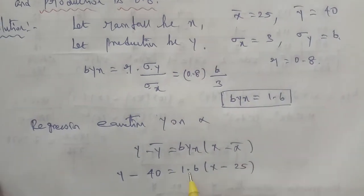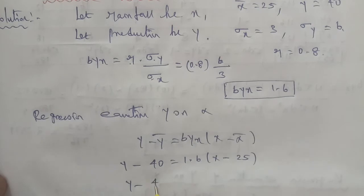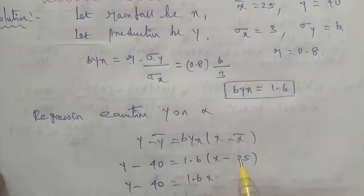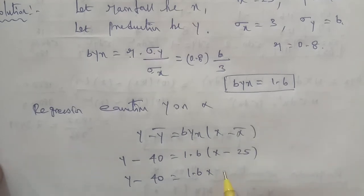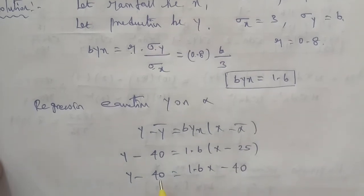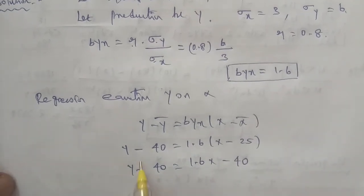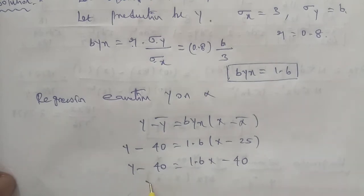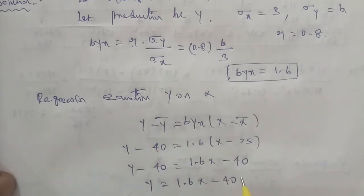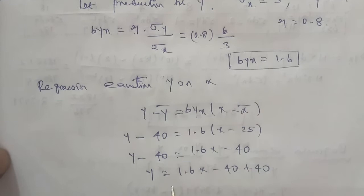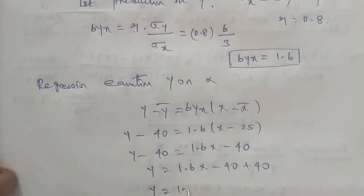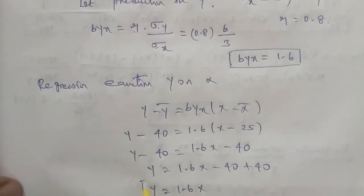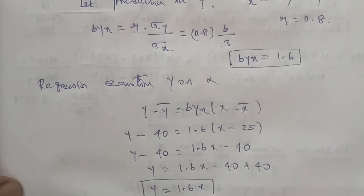So y minus 40 equals 1.6 into x minus 25. Expanding: y minus 40 equals 1.6x minus 40. The minus 40 and plus 40 cancel out, so y equals 1.6x. This is the regression equation y on x.